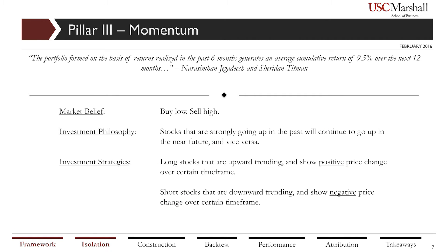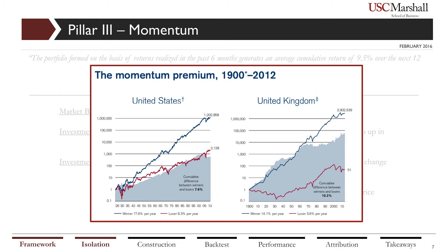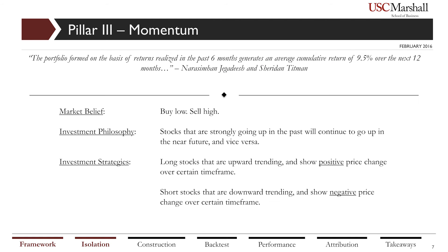For our momentum factor, the market currently believes in buying low and selling high. Our investment philosophy was that stocks strongly going up in the past will continue to experience share price appreciation in the near future, and vice versa. This philosophy is backed by Jegadeesh and Titman, as the six-month trailing momentum strategy realizes a compounded excess return of 9.5% per year on average. We also incorporated technical analysis from head researchers at the University of Colorado Denver and Washington University St. Louis. We executed this factor by buying upward trending positive momentum stocks and shorting downward trending negative momentum stocks.